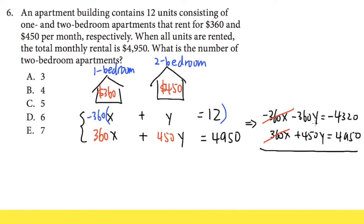And then we can continue. This is negative 360y plus 450y, together will give us positive 90y. And then this is equal to, just add this up: negative 4320 plus 4950, we will get 630. At the very end we can just divide both sides by 90 so that we can get the y by itself, and we see that y is equal to 630 divided by 90, that will give us 7. And then we are done.